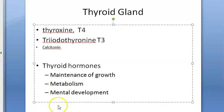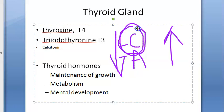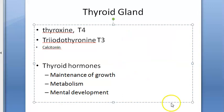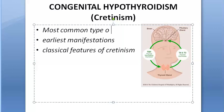Hypothyroidism can be congenital or acquired. If congenital, it is called cretinism. If acquired, it is called juvenile hypothyroidism. Congenital hypothyroidism or cretinism is the most common type of hypothyroid state, which is why it is very important to know.